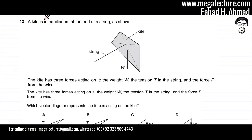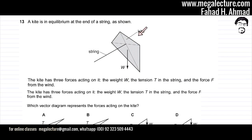The following question reads that a kite is in equilibrium at the end of a string as shown. There's a string, and there's the weight of the kite, and the kite is in equilibrium.